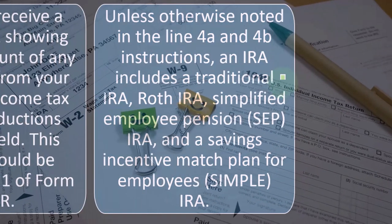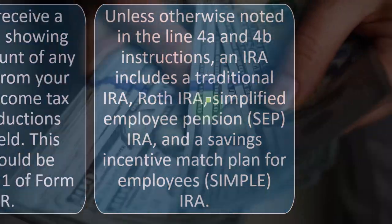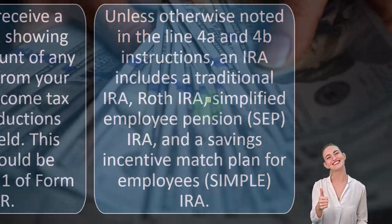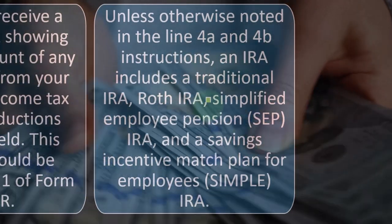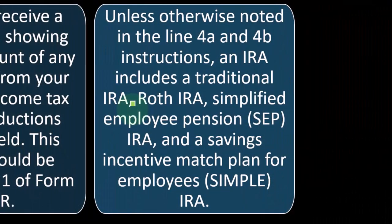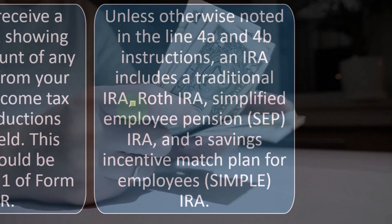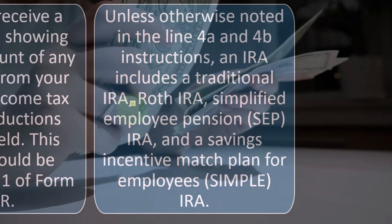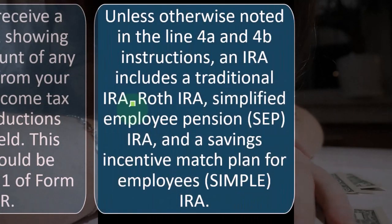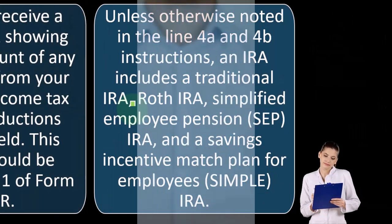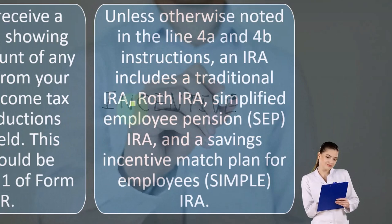A Roth IRA is a situation where you don't get the tax benefit when you put the money in, but you get the tax benefit when you take the money out. The government is trying to incentivize you to save. If you're in a situation where you don't have much tax right now because your income is fairly low, or you think tax rates are going to go up at retirement, you might prefer to take the tax hit now. In that case, a traditional IRA wouldn't be as attractive since you're not paying much in taxes currently or you expect taxes will be worse later.